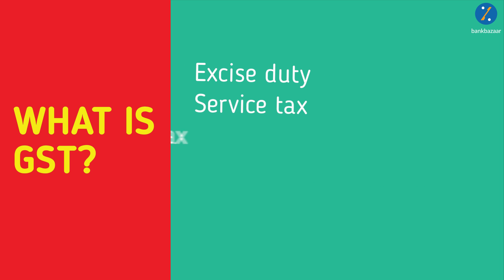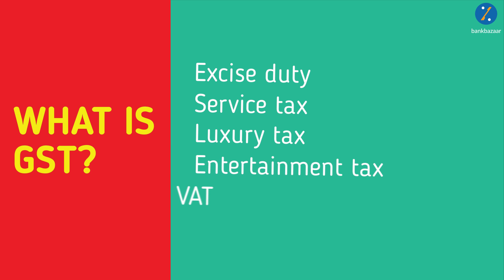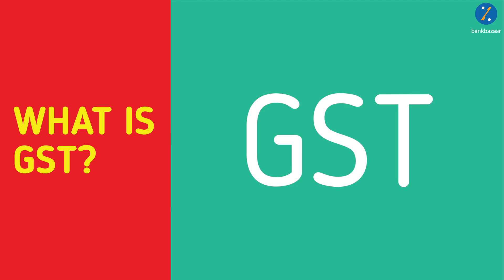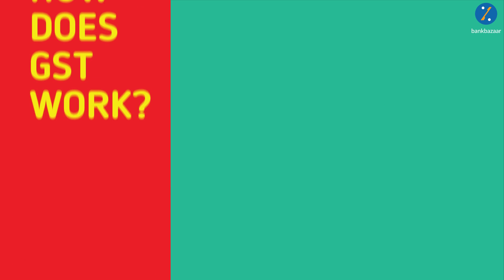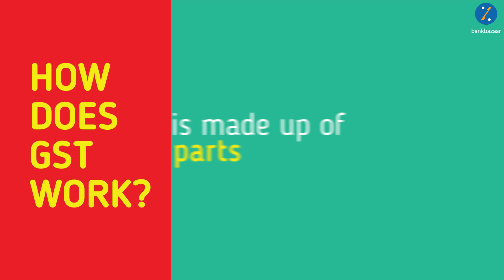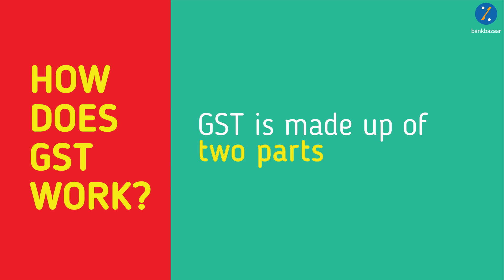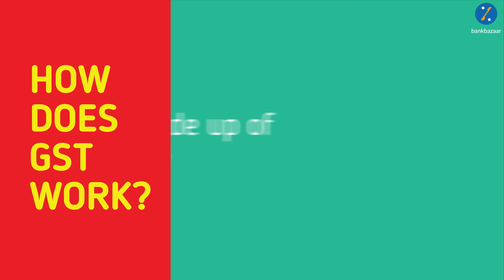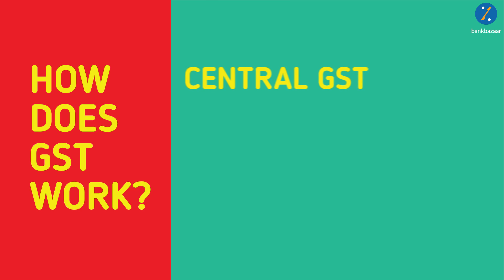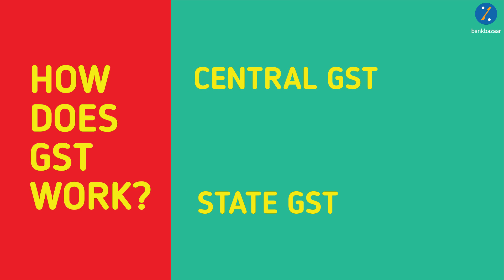This means that taxes such as excise duty, service tax, luxury tax, entertainment tax, and VAT are now replaced by one single GST rate. How does GST work? The Goods and Services Tax is made up of two parts: the central GST and the state GST.